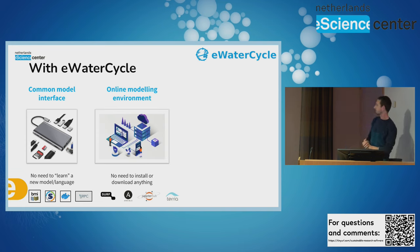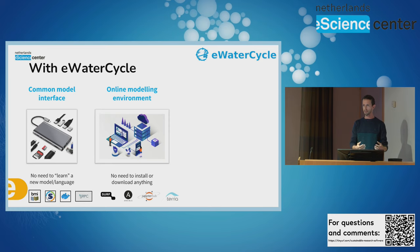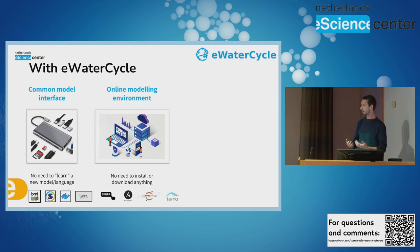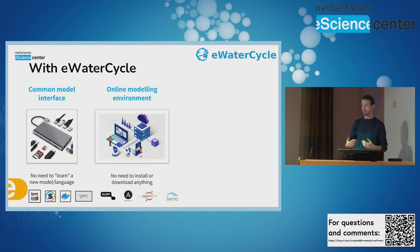The second component is an online modeling environment, because sometimes it can be a pain to install a model on your computer, and even if you manage to install it, it can be too big to run. We try to take those problems out of your hands by hosting this entire analysis platform on special computers offered by SURF. The user simply goes to a web address, logs in with a user ID and password, and then can use those compute resources where the models are already installed and the data is already available.